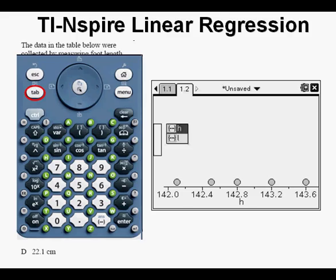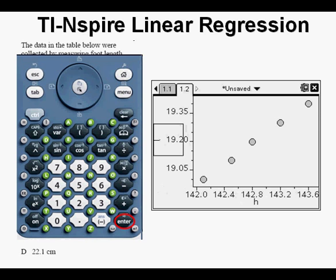Press Tab again at the upper left. Arrow down once to choose L on the vertical axis. Press Enter. We observe a nice linear pattern of points.